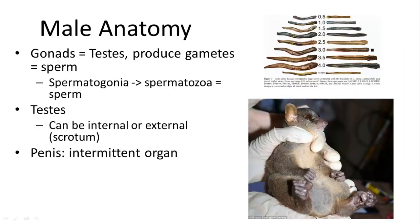We'll go briefly through some of the male anatomy and then spend most of our time talking about the female anatomy, because that's where most of the important parts of reproduction occur. The gonads for males — where meiosis occurs and gametes are formed — are the testes. These are the same embryonic structures as the female gonads, and they produce sperm. The spermatogonia are the stem cells which develop and divide into spermatozoa, generally having a head and a tail, and are fully mature as sperm.